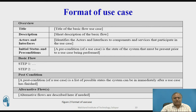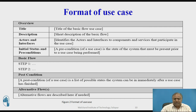This is the format of a use case. First, an overview can be defined, followed by the title of the basic flow use case, then a short description of the basic flow. Then actors and interfaces are written — identifying the actors and interfaces to components and services that participate in the use case. Next, initial status and preconditions: the state of the system that must be present prior to the use case being performed. Then the basic flow of activities is described step by step. Post conditions list the possible states the system can be in immediately after a use case has finished. Alternate flow describes variations if needed. This is the format for a thorough representation of a use case.